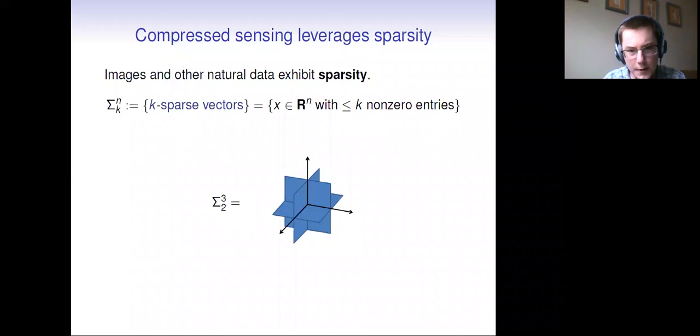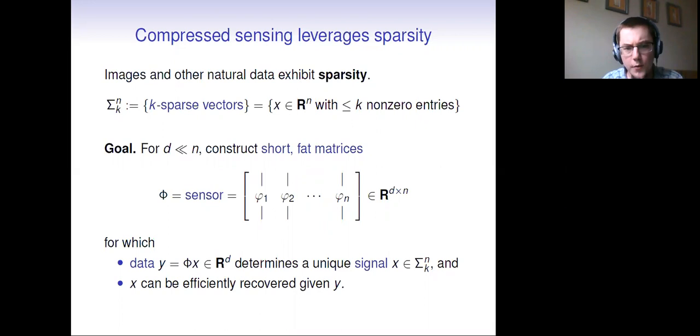Roughly compressed sensing, the biggest idea behind it is that it's leveraging sparsity. Images and other natural data when encoded correctly exhibits sparsity. So I want to make a definition of the sigma-k thing, where this is going to be k-sparse vectors. These are vectors in R^n with at most k non-zero entries. You should be thinking of this as a union of subspaces. I've drawn sigma-2,3 here for you. These are the vectors in R^3 that only have two non-zero entries. These are the three planes that you see intersecting at the coordinate axes.